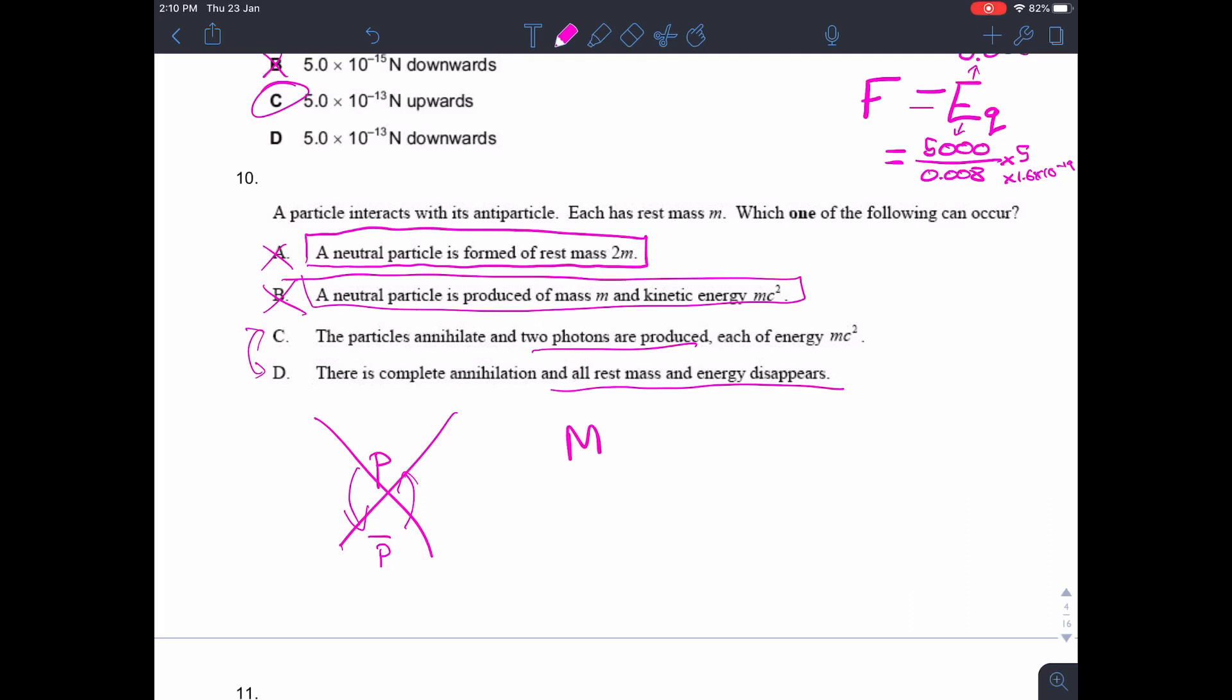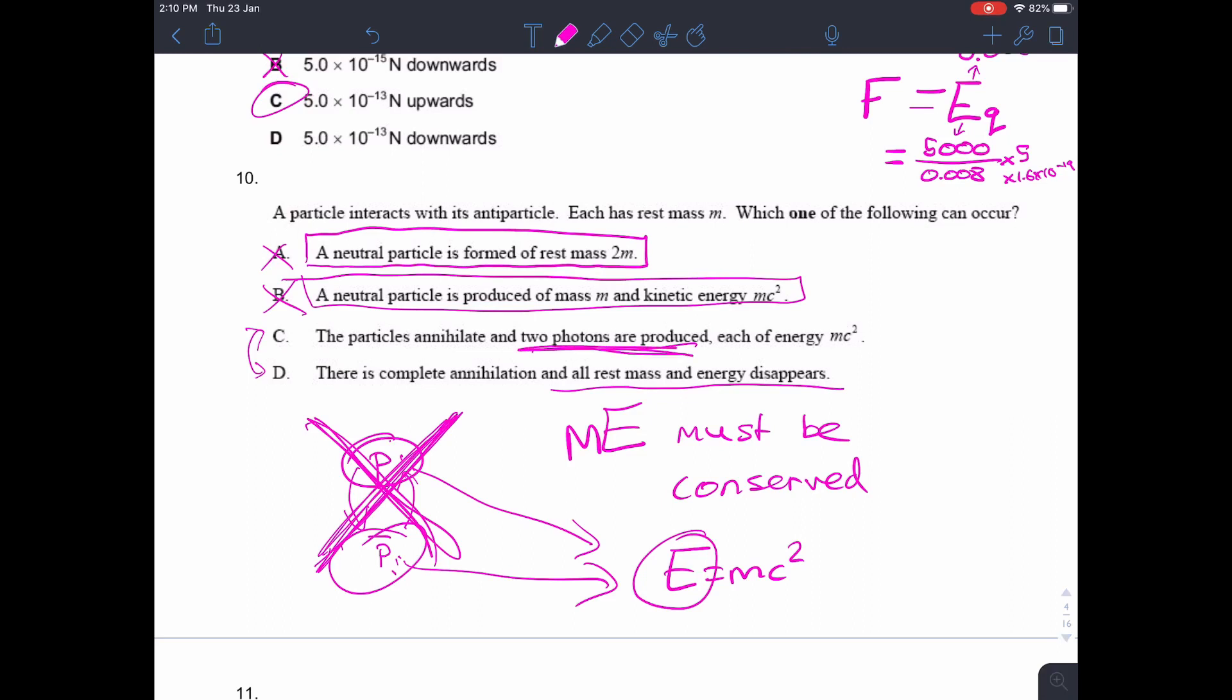Now, remember that mass energy must be conserved. So, there is never ever going to be a situation, apart from perhaps in tiny virtual particles which are around for a tiny fraction of a second, if you're thinking about the uncertainty principle, there will never be a situation where mass and energy is not conserved. So, there will never be a situation where you could have two particles, and all of a sudden there's no particles and no energy. Remember that E equals mc squared. And so, the energy equivalent of one of these particles is mc squared. The energy of this particle is mc squared as well. And so, we're going to produce two photons, and each one of those is going to have energy mc squared. So, the answer must be C.